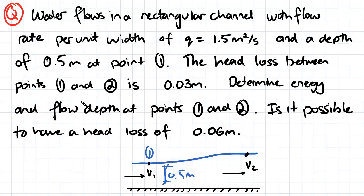The head loss between points 1 and 2 is 0.03 meters. Determine energy and flow depth at points 1 and 2, and is it possible to have a head loss of 0.06 meters?